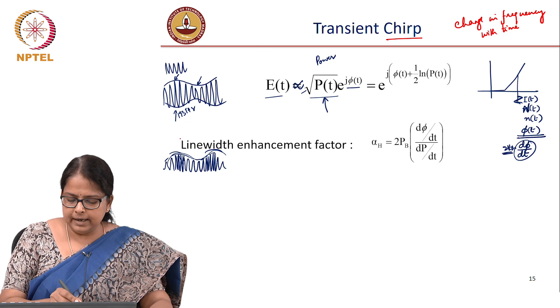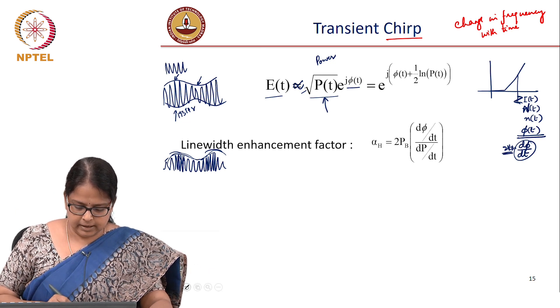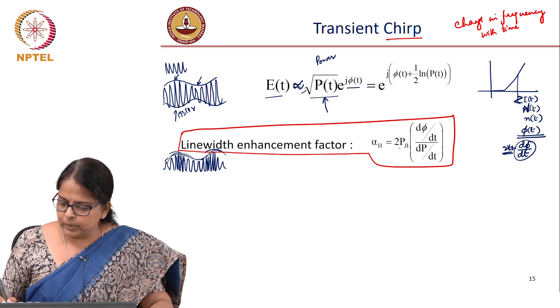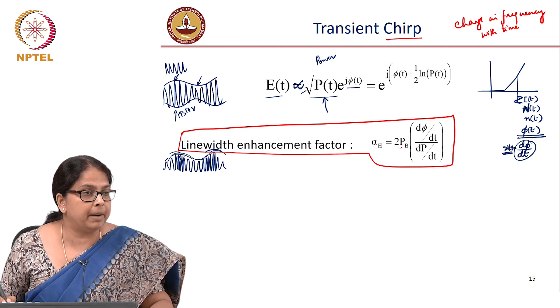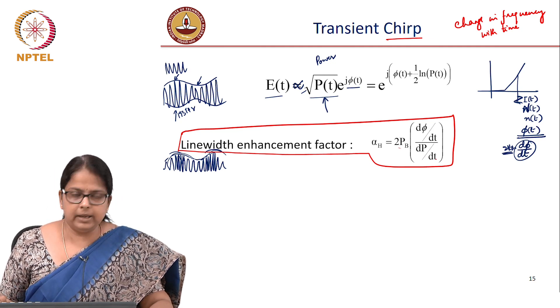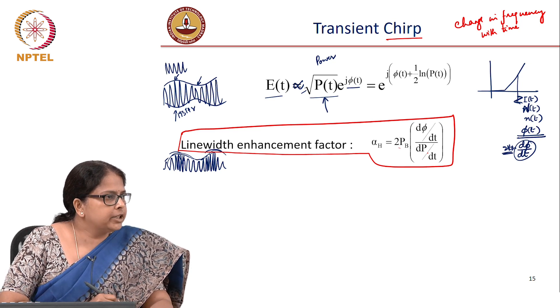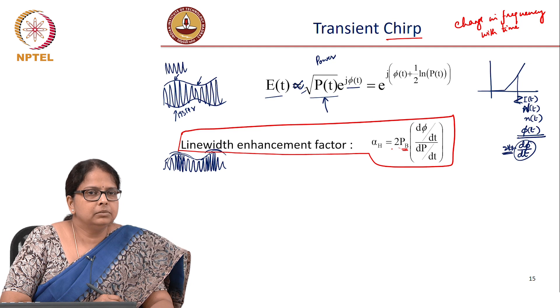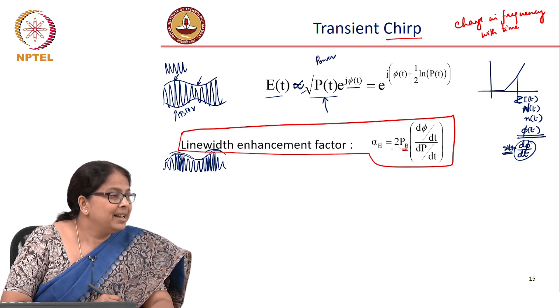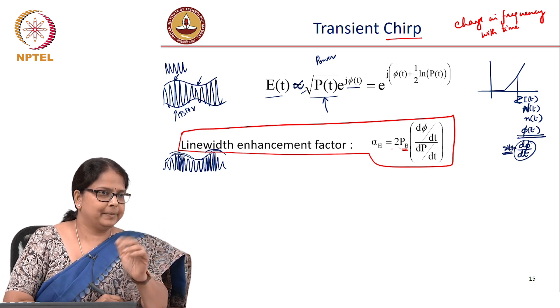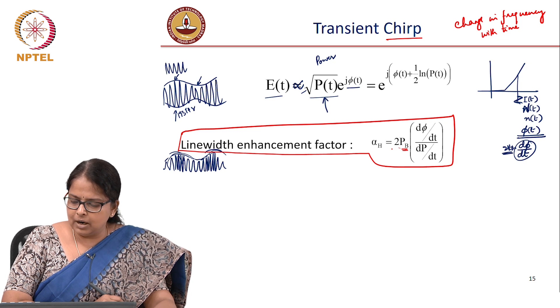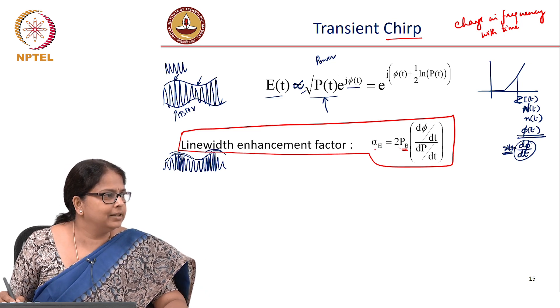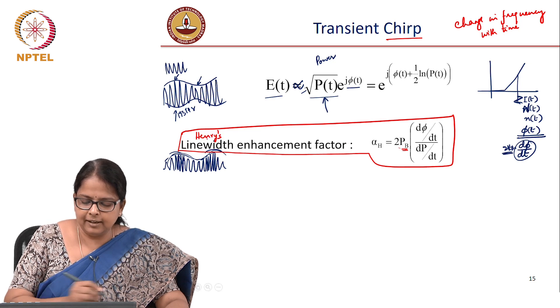They define what is called as a line width enhancement factor. This is something known for a given laser, which is twice pb, where pb is the bias current or bias power, d phi by dt to dp by dt. Ratio of phase modulation to the ratio of intensity modulation or power modulation. Why should it have pb? Intuitively it will have pb because depending on the bias, your index is itself different.